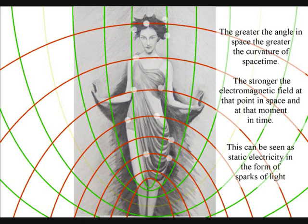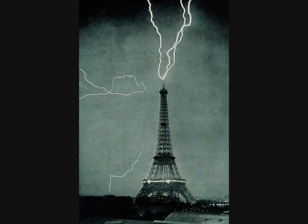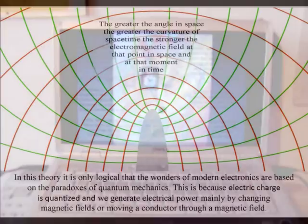This can be seen as sparks of light associated with static electricity. The atoms will even distort the geometry of spacetime, creating electrostatic discharge in the form of lightning.